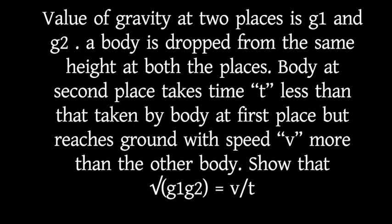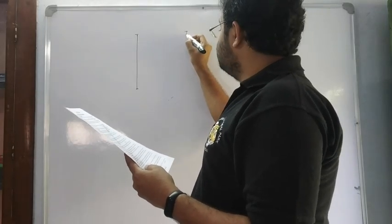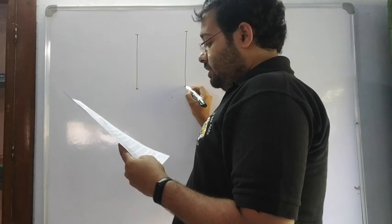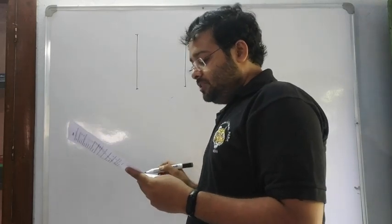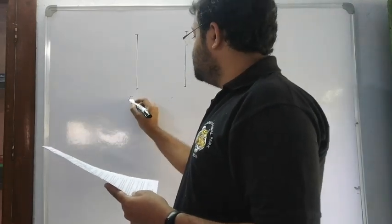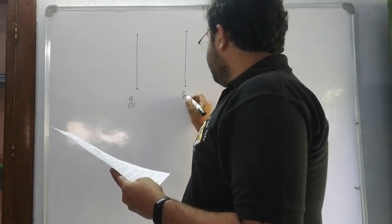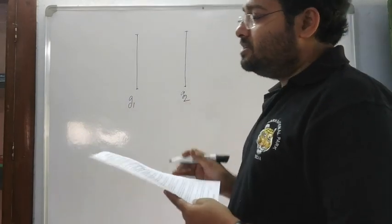Next problem: the value of gravity at two places g1 and g2. Bodies are dropped from the same height at both places. The body at the second place takes time t less than the time taken by the body at the first place, and reaches the ground with speed v more than the other body.